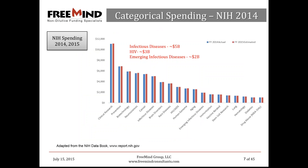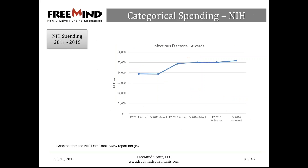A significant amount of NIH spending is allocated to infectious diseases. It's important to note that these numbers overlap — not separate allocations for infectious disease, HIV, and emerging infectious diseases — but it gives you an idea that infectious disease represents a significant amount of money funded by NIH. And it's nice to see that infectious disease awards are on the rise, which is certainly positive for research funding.